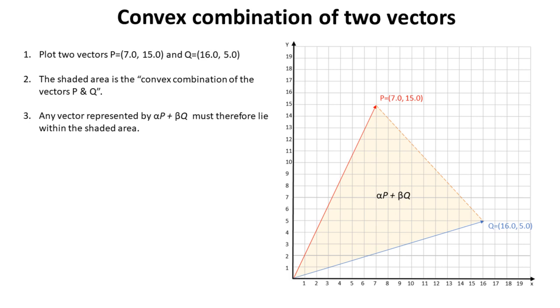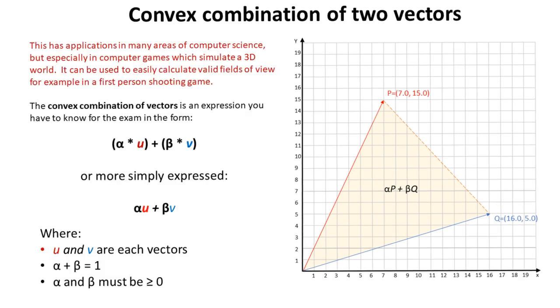This is what's known as the convex combination of two vectors. This has applications in many areas of computer science, but especially in the field of computer games which typically simulate 3D worlds. It can be used to easily calculate valid fields of view, for example, in a first-person shoot-em-up game.